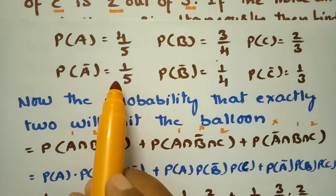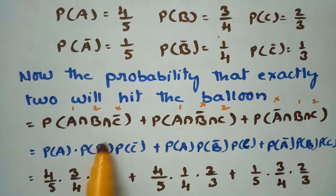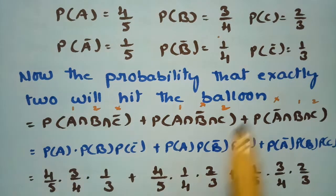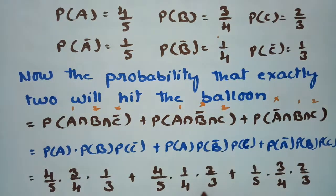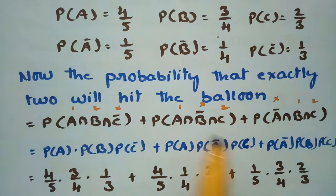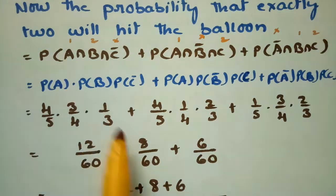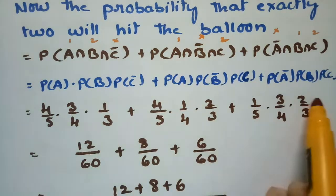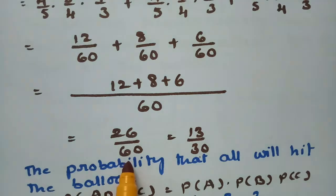Substituting the values: P(A)·P(B)·P(C̅) = (4/5)·(3/4)·(1/3) = 12/60; P(A)·P(B̅)·P(C) = (4/5)·(1/4)·(2/3) = 8/60; P(A̅)·P(B)·P(C) = (1/5)·(3/4)·(2/3) = 6/60. Taking 60 as the common denominator: 12 + 8 + 6 = 26/60 = 13/30. So the probability that exactly 2 hit the balloon is 13/30.